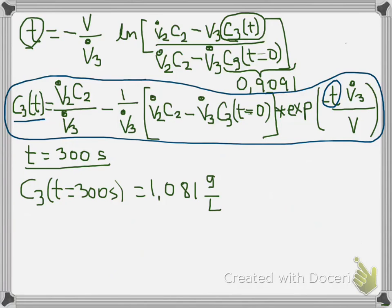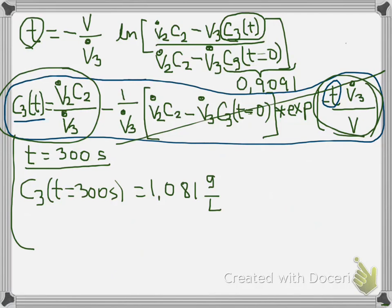Now, if we want to find the final concentration at the new steady state, that is going to happen when time equals infinite. You can substitute time equals infinite in this equation. You will see that the exponential term vanishes, and the concentration will be found only using the remaining terms. This is the equation that holds when time equals infinite. You just solved your first unsteady state mass balance. Great!